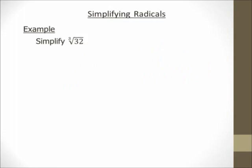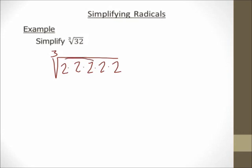We're going to simplify the cube root of 32. First thing: break 32 down into its prime factors. 32 is 2 times 2 times 2 times 2 times 2 — it's five 2's. The next step: I'm going to circle groups of 3 of the same thing, because my index is a 3 in this case. I see a group of three 2's — and that's it. So I bring one of those 2's out front. I have 2 as the coefficient times the cube root. I have to remember that index — a square root and a cube root are two completely different things. Two times 2 is left over, so I have 4. My answer is 2∛4.